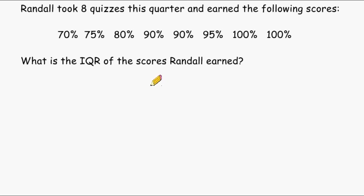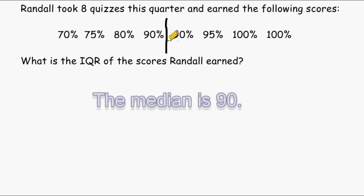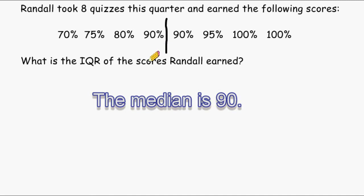To find the IQR, we should start with the median of our data set. Let's count and see how many numbers we have: one, two, three, four, five, six, seven, eight numbers — which is an even number. When you have an even amount of numbers in your data set, just draw a line straight down the middle.